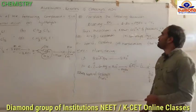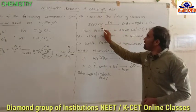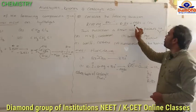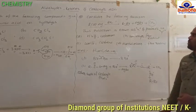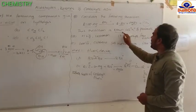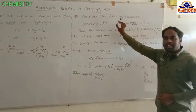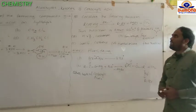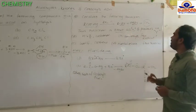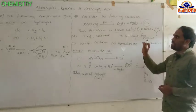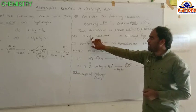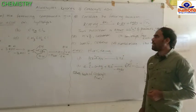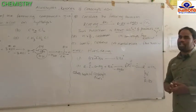Consider the following reaction: silver salt of carboxylic acid reacts with bromine, forming alkyl bromide, silver bromide, and carbon dioxide. This reaction is known as X and proceeds via Y intermediate. The options are: A — X is HVZ, Y is carbocation; B — X is Sandmeyer, Y is free radical; C — X is Wolf-Kishner, Y is carbocation; D — X is Hunsdiecker reaction, Y is free radical. The Hunsdiecker reaction: silver salts of carboxylic acid react with bromine and form alkyl bromide, with one carbon decrease in the product compared to the reactant.